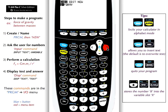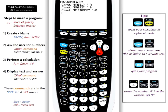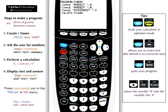Let's go back and edit the program some more — program, edit, force of gravity. Now I want to tell the calculator how to calculate the gravity force. I'll put the equation in: G is 6.67 times 10 to the negative 11, times mass 1 (A), times mass 2 (B), divided by distance C squared. Unbracket, and I'm going to store this number as variable G.